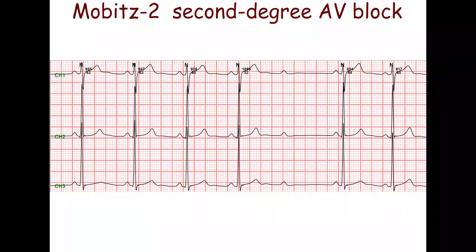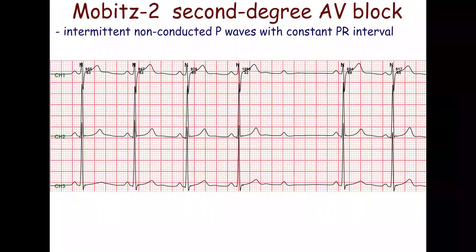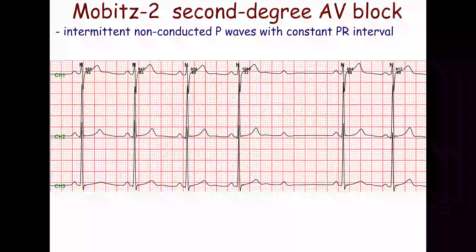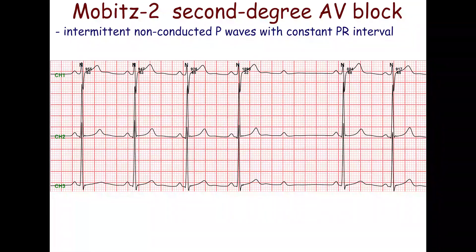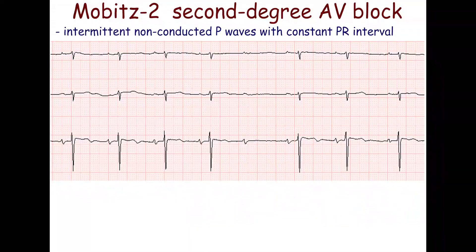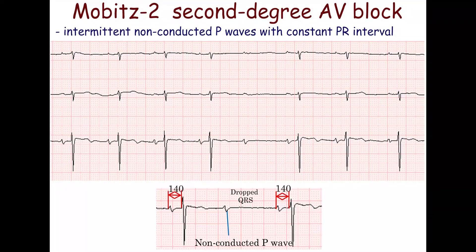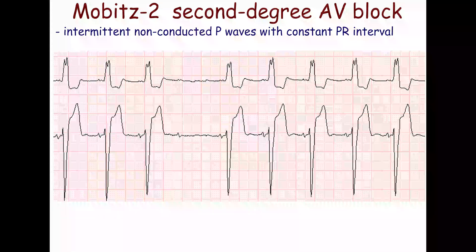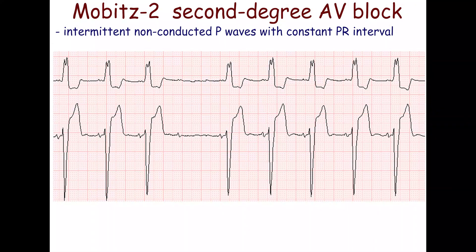Mobitz 2 second-degree atrioventricular block is characterized by intermittent non-conducted P waves without progressive prolongation of the PR interval. The PR intervals are constant. Only a quarter of patients with Mobitz 2 second-degree atrioventricular block have narrow QRS complexes; usually, wide QRS complexes are seen.